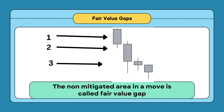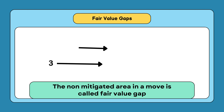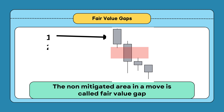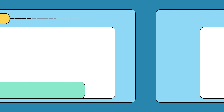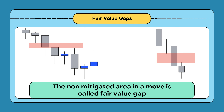This is an example of a fair value gap in the sell side. In this move, this is the area where no buying is taking place. These are some more examples of fair value gaps.